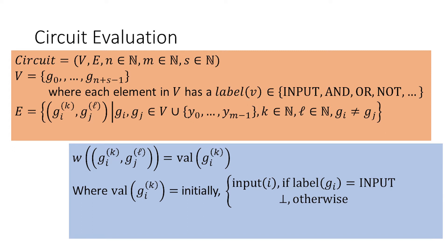To identify the circuit's behavior, we'll work through the definition of the W function that tells us the value carried by an edge. This definition shows us how to identify the input to the circuit and how information propagates through it as computing progresses. We're going to have a val function which identifies the value of a gate, so the value carried by an edge is the val of the gate that the edge came from. The value of a gate changes as we progress through execution.